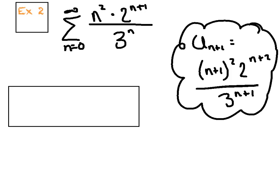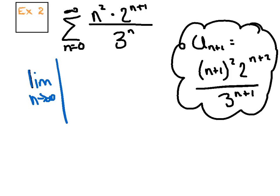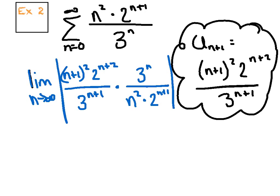Here we go. The ratio test says: limit as n approaches infinity, absolute values, the (n+1)st term on top. Now we're going to multiply by the reciprocal of the nth term—the one that was given to us. Close off the absolute values. And here's the fun part: there's so much stuff to clean up.